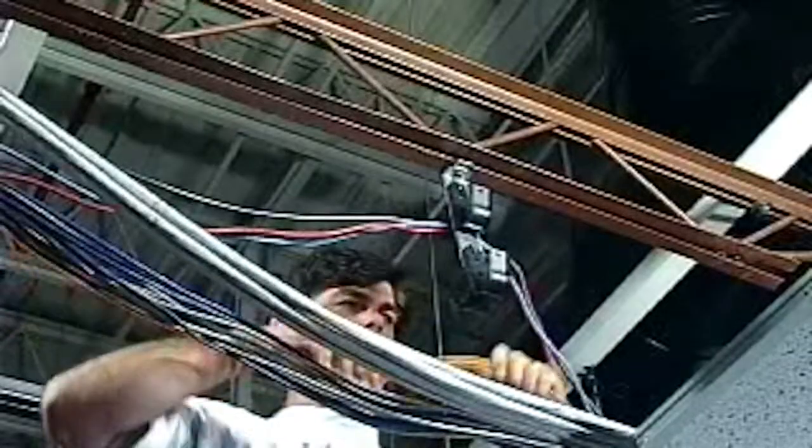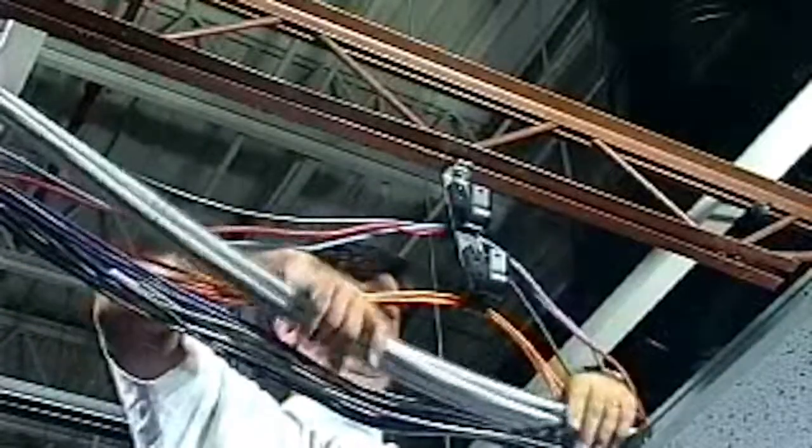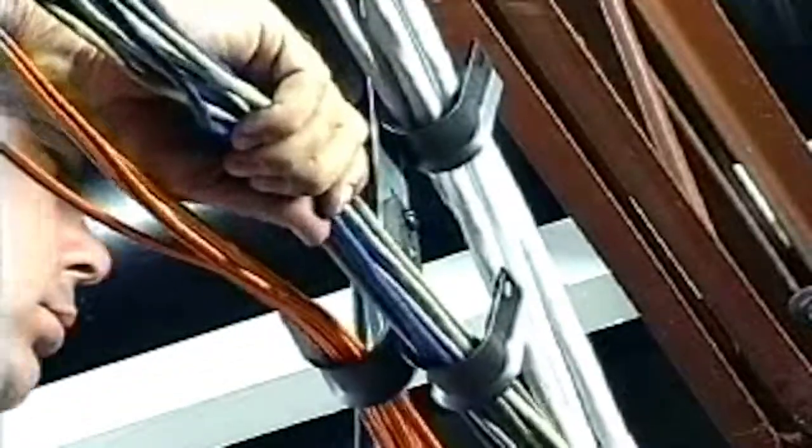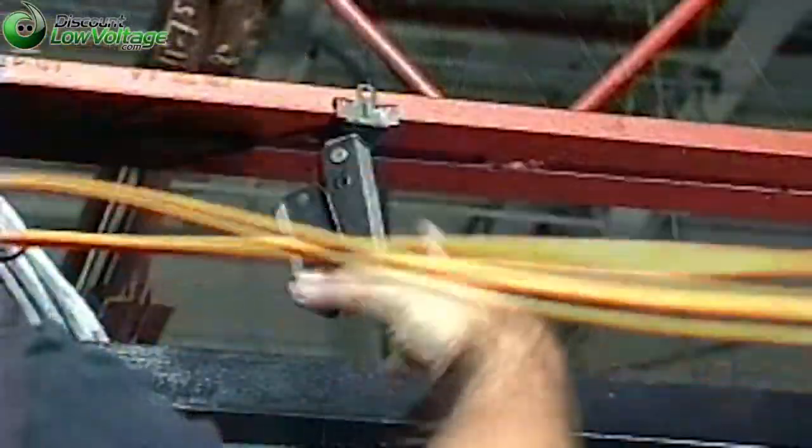The original CableCat J-Hook was the first fastener assembly specifically designed for high-performance cables such as Category 5 twisted pair cables, fiber optic cables, and inner duct.